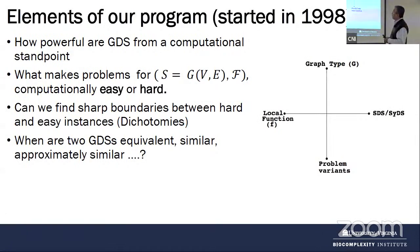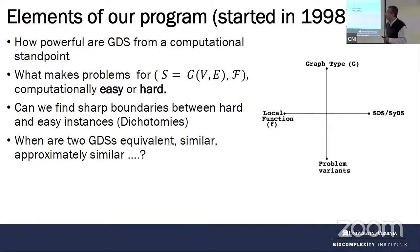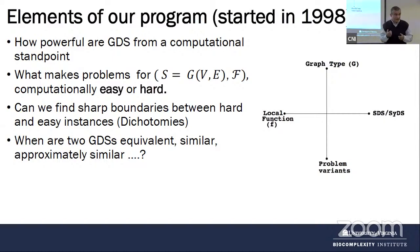To set up the mathematics, the goal is to understand these basic questions from a computational standpoint. What makes this problem easy or hard? Can we come up with sharp boundaries between easy and hard? That's the dichotomy that computer scientists are interested in — made famous by Schaefer and others. When are two GDS equivalent, or similar? We have four things to worry about: the problem, the local function, the update rule, and the graph — and we want to understand these questions as a function of each of these parameters.